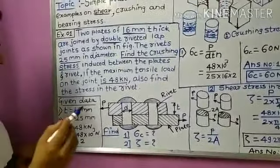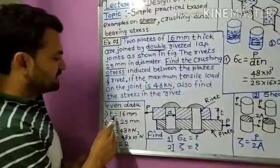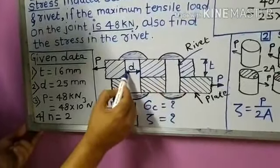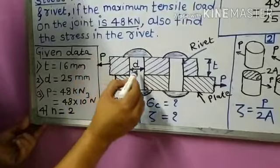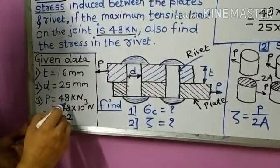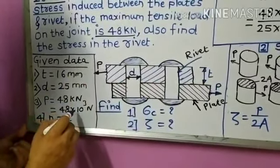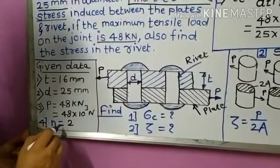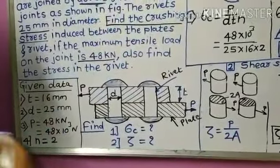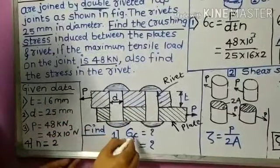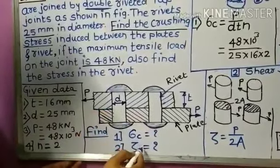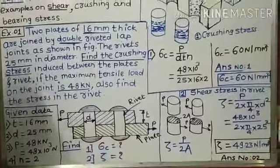The given data for this problem: thickness of plates t = 16 mm; diameter of rivet d = 25 mm; load P = 48 kN = 48 × 10³ N; number of rivets n = 2. We have to find two stresses — first, the crushing stress, and second, the shear stress in the rivet.